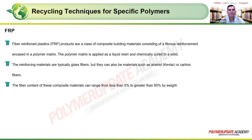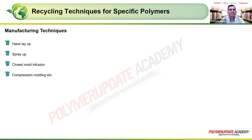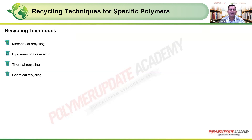The fiber content of FRP composites can range from less than 5% to greater than 60% by weight. Manufacturing techniques include hand lay-up, spray-up, closed mold infusion, and compression molding. Recycling techniques for FRP include mechanical recycling, incineration — which is practiced on a mass scale — and thermal and chemical recycling.